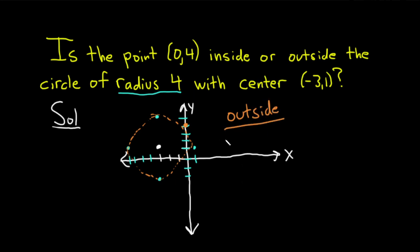Another way to do this problem, you could do it algebraically. So the equation of a circle is (x - h)² + (y - k)² = r². So if my picture, which is really rough, is not convincing, let's see if we can do it algebraically.